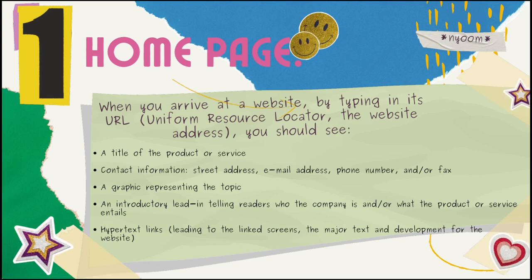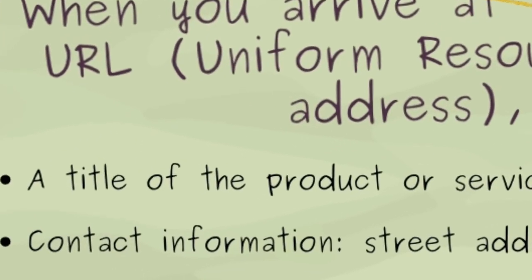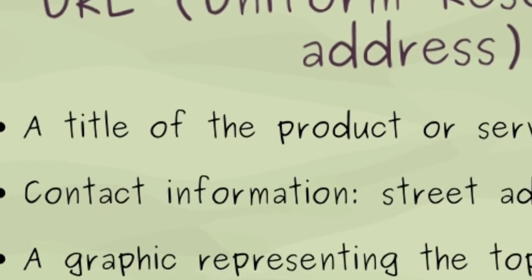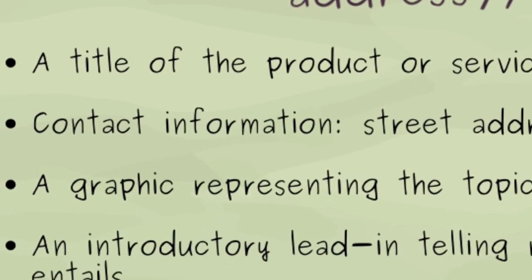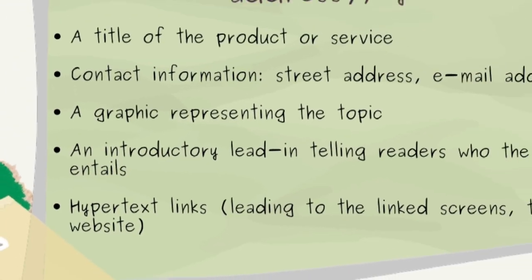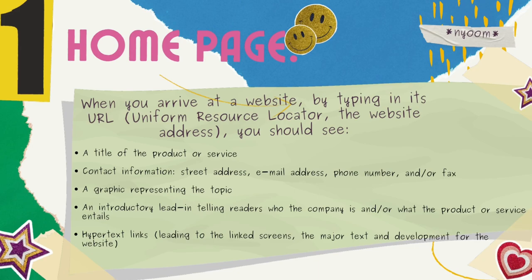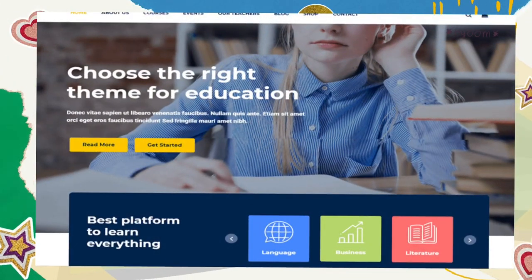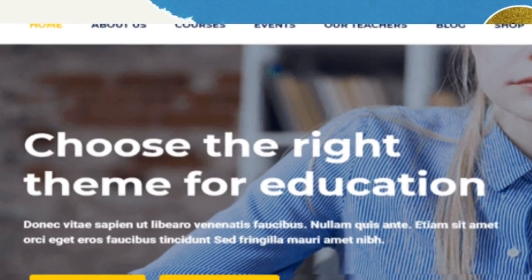When you arrive at a website by typing in its URL — Uniform Resource Locator — or website address, you should see: a title of the product or service, contact information, a graphic presenting the topic, an introductory lead, and hypertext links. Here, for example, this is the title of the product or service.